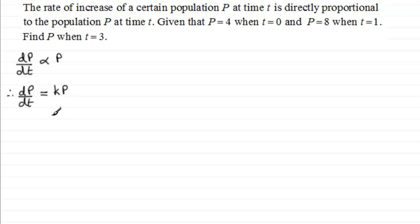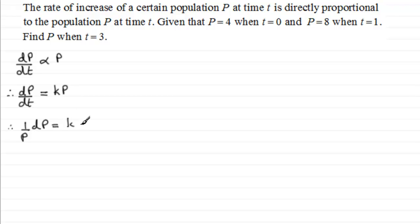Now we've got to solve this differential equation, and we do this by separating the variables. We divide both sides by p and move the dt, giving us 1 over p dp equals k dt, and we must integrate both sides at this stage.